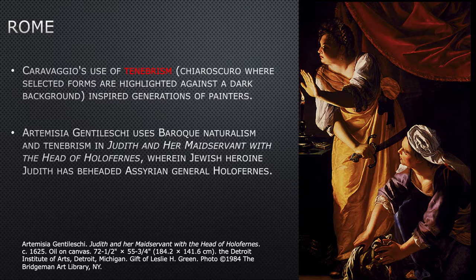Caravaggio's use of tenebrism — that's the term you need to know — is the chiaroscuro where selected forms are highlighted against a dark background. His tenebrism inspired generations of painters. Artemisia Gentileschi, an Italian woman, uses Baroque naturalism and tenebrism in 'Judith and Her Maidservant with the Head of Holofernes,' wherein the Jewish heroine Judith has beheaded the Assyrian general Holofernes.